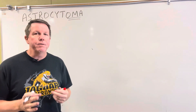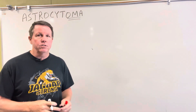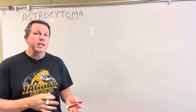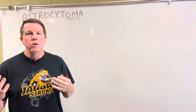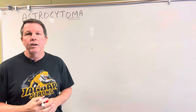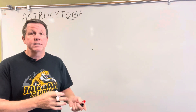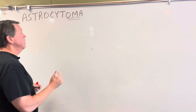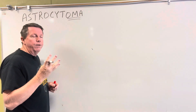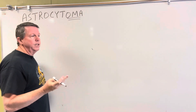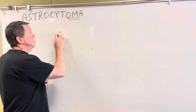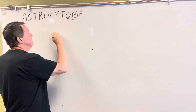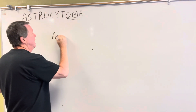Astrocytes are a type of glial cell. Glial cells are basically cells that help provide support and metabolism for the cells in the nervous system outside of the neurons. There are actually four different types of glial cells, but today I'm just going to concentrate on astrocytes.